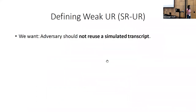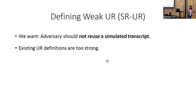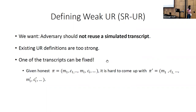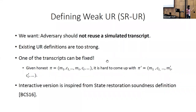Taking a step back, all we needed for the proof was that the adversary should not be able to reuse a simulated transcript. The observation is that the definitions in the literature are too strong — it suffices to fix one of the transcripts. It suffices to fix an honest transcript pi and ask the adversary to produce pi-prime with respect to this pi. We introduced this notion, inspired by state restoration soundness introduced by Ben-Sasson et al. State restoration soundness nicely captures the additional advantage the prover has in the non-interactive case: the ability to rewind the verifier and ask for different challenges.